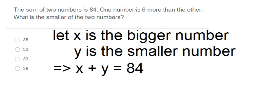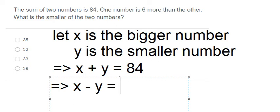One number is 6 more than the other. This means the bigger is bigger than the smaller, that's why we have x minus y equals 6, because the bigger number minus the smaller number equals 6.